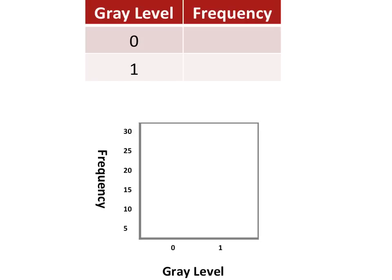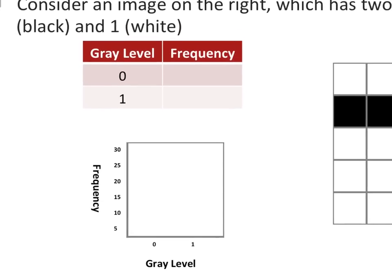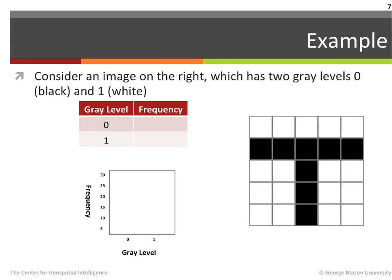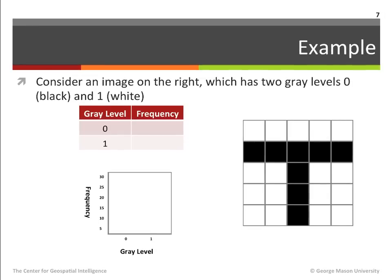It is worth noting the correspondence between the gray level column of the table and the x-axis of the chart, and similarly the correspondence between the frequency column of the table and the y-axis of the chart. As we know already the gray level values that exist in the image, we can write them in ascending order in the gray level column of the table and as labels in the x-axis of our chart. Now let us begin the histogram generation process.